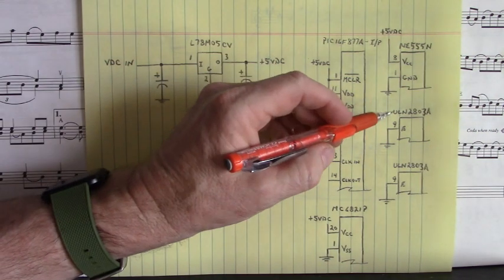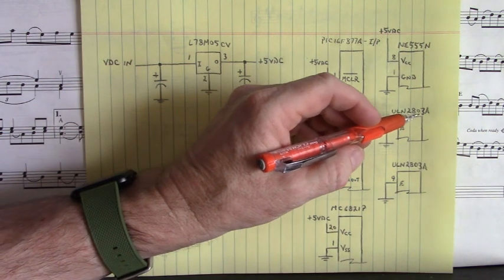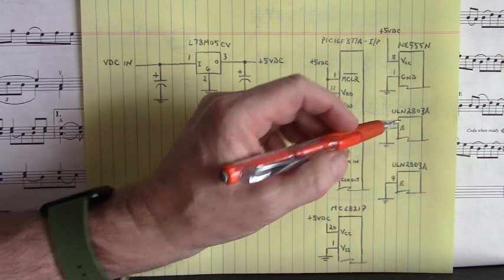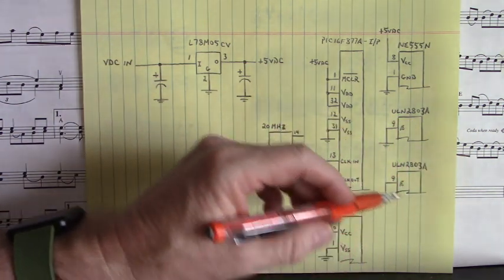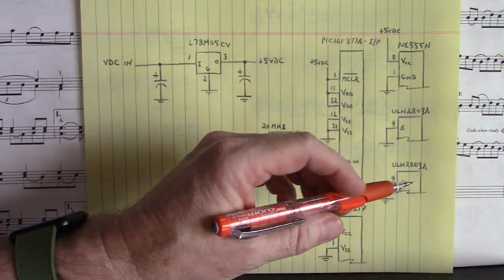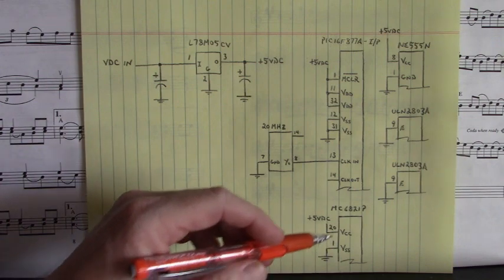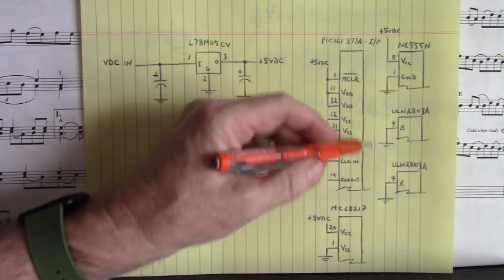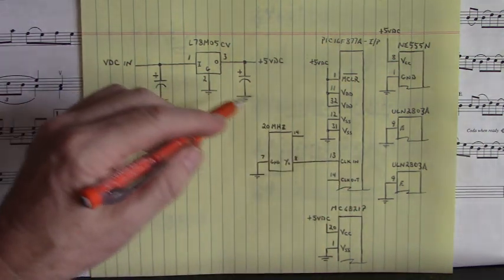The two ULN2803A, here and here, that drive the LED circuitry from port A and port B of the MC6821P. The emitter pins, pin 9, must be tied to power supply ground.